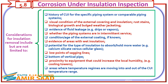Considerations for insulation removal include but are not limited to: history of CUI for the specific piping system or comparable piping systems; visual condition of the external covering and insulation; rust stains, biological growth, and bulged weather jacketing; evidence of fluid leakage, for example drips or vapors; whether the piping systems are in intermittent service; and condition and age of the external coating, if known.